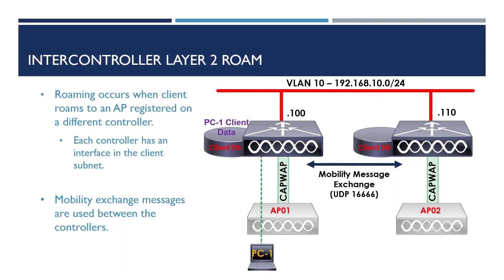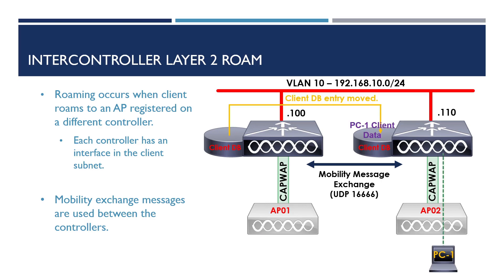Next up we have Inter-Controller Layer 2 Roaming. This roaming occurs when our client roams between APs on two different wireless LAN controllers. However, each of these controllers still has an interface on the same subnet or VLAN. Both the wireless controllers will communicate with each other with what's known as mobility messages. These messages are sent via UDP port 16666. When our client roams to the new AP, the client data is copied from the database on the original wireless controller to the new one the client is associated with.